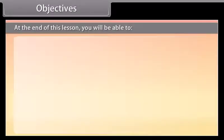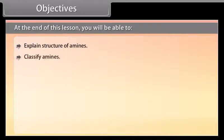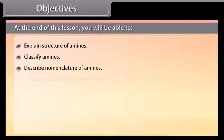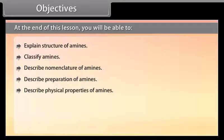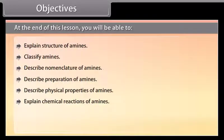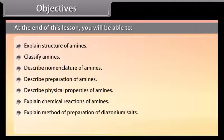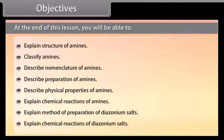At the end of this lesson, you will be able to: explain structure of amines; classify amines; describe nomenclature of amines; describe preparation of amines; describe physical properties of amines; explain chemical reactions of amines; explain method of preparation of diazonium salts; explain chemical reactions of diazonium salts.